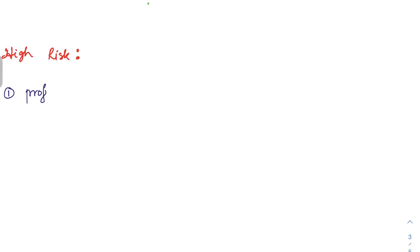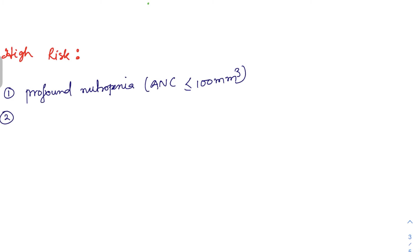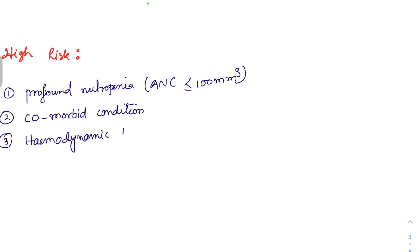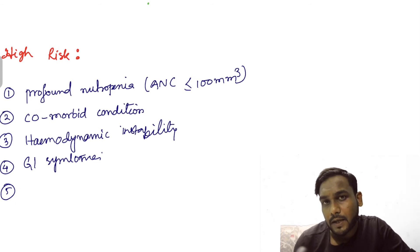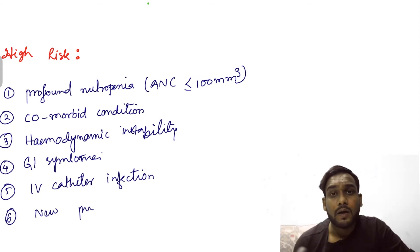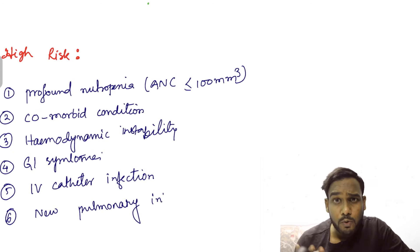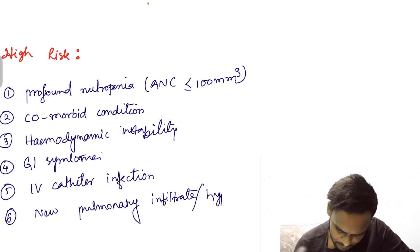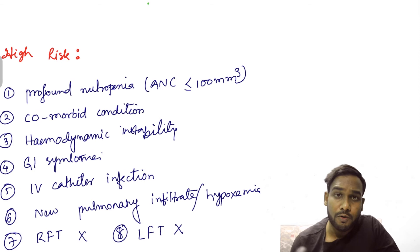A child will be considered high risk if there is profound neutropenia — absolute neutrophil count less than 100 per millimeter cube — or if there are comorbid conditions, shock, pneumonia, or diarrhea. High risk also includes hemodynamic instability, GI symptoms like abdominal pain, nausea, or vomiting, IV catheter infection, hypoxemia, new pulmonary changes on chest X-ray, or evidence of hepatic or renal dysfunction.